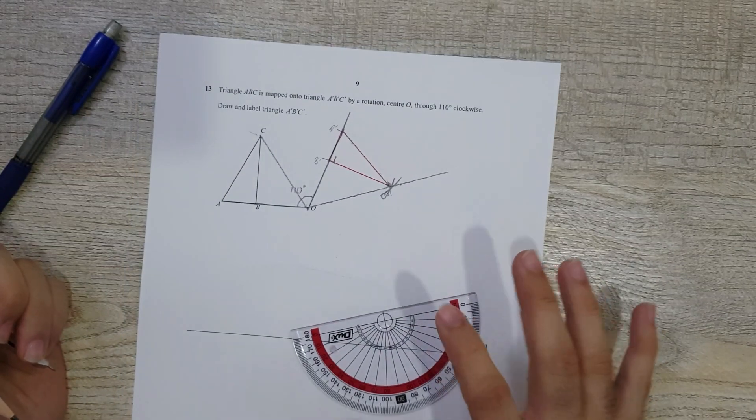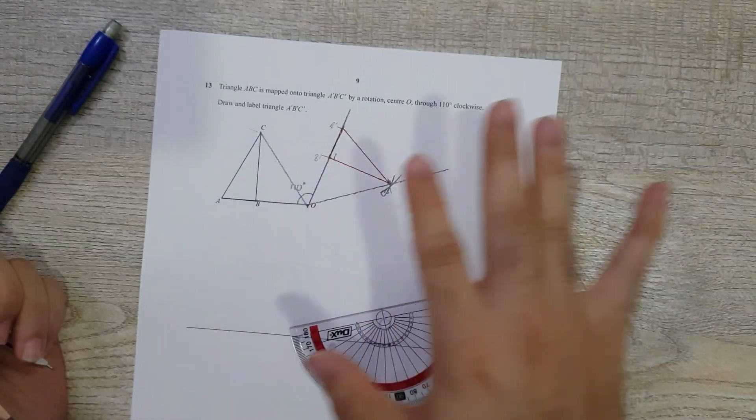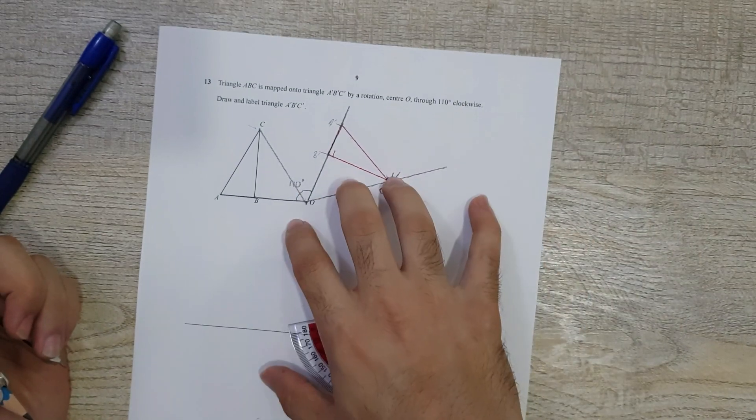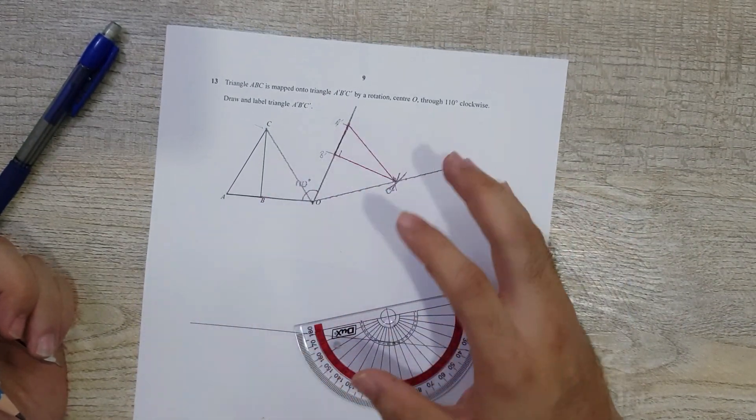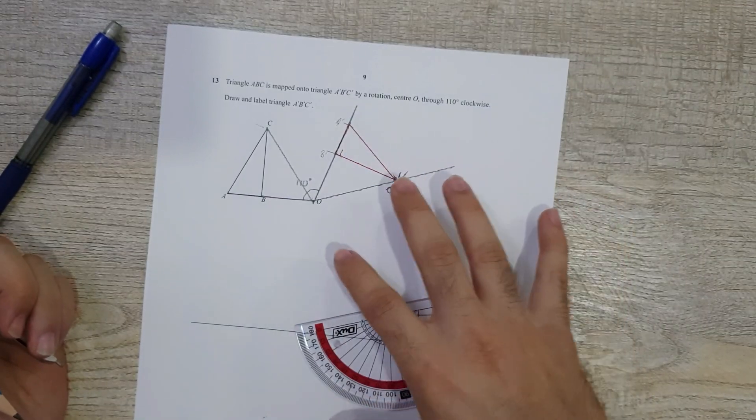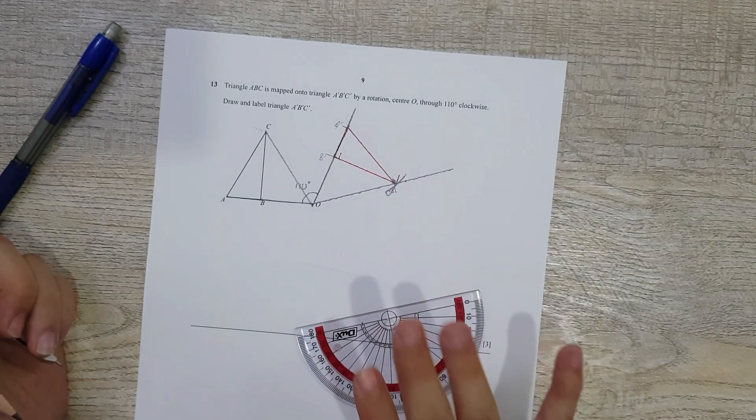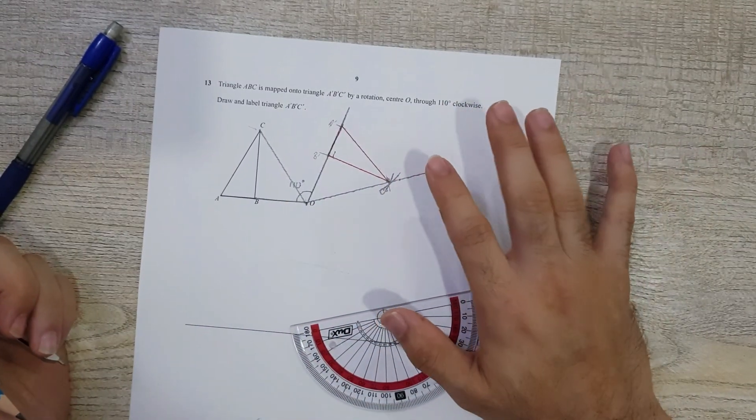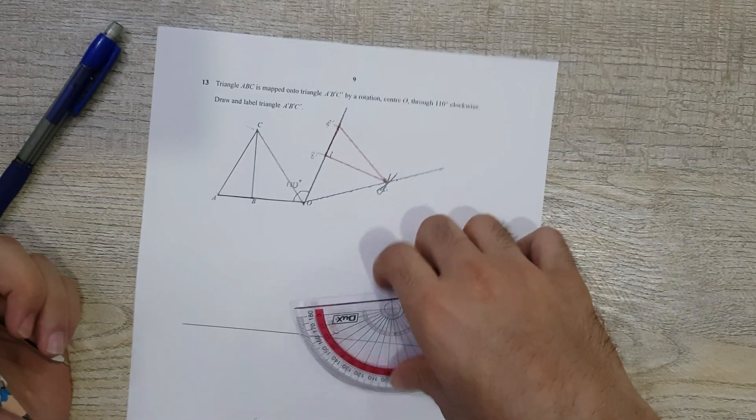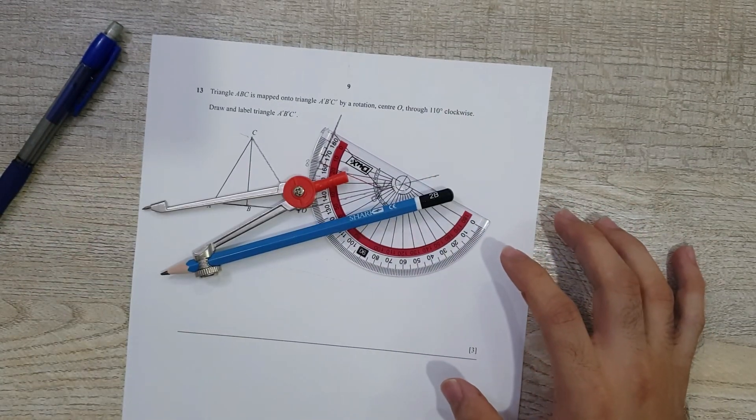This is how you're going to rotate any shape. You can do the same with 90 degrees and 180 degrees also, but that's not something I would recommend because questions of 90 degrees and 180 degrees usually come on graphs, so you don't necessarily have to use your compass. But whenever it's non-90, 180, or 270, make sure that you use this method. That's all for this video. I'll see you guys in the next one. Until then, take care. Bye.